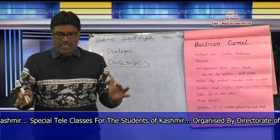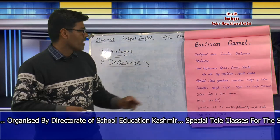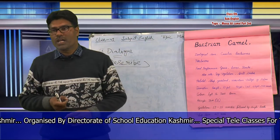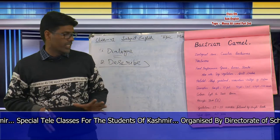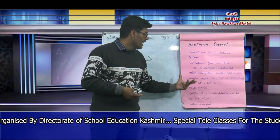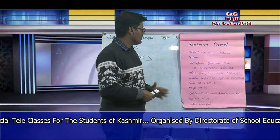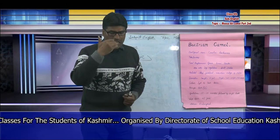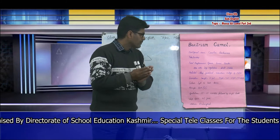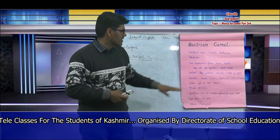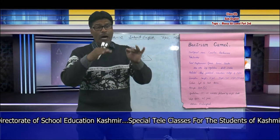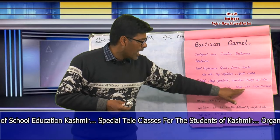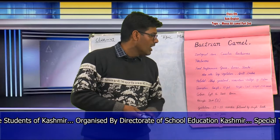Habitat means the place where the Bactrian camel lives. The habitat for a Bactrian camel is steep grassland and mountain valleys — for example, Nubra. Now coming to the physical description: a Bactrian camel can grow up to a length of 10 feet when it reaches adult age. The maximum height of a Bactrian camel at the hump level will be up to 7 feet. Its weight will be 1,500 pounds.